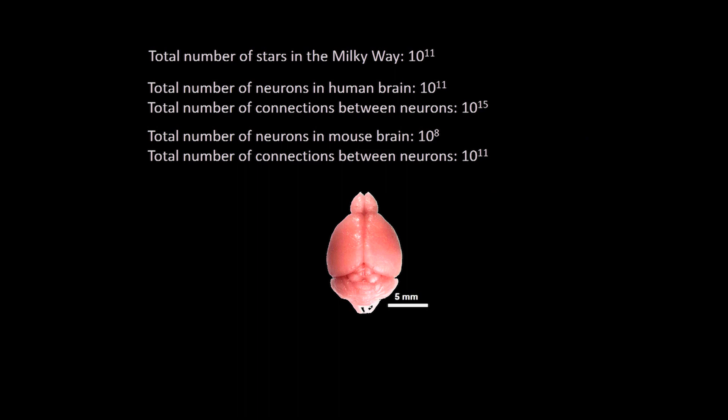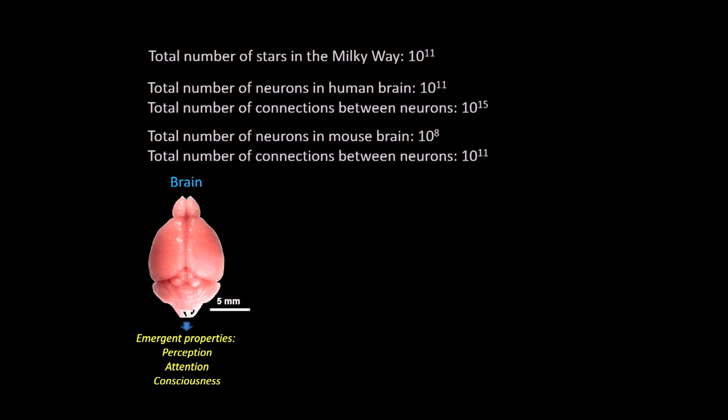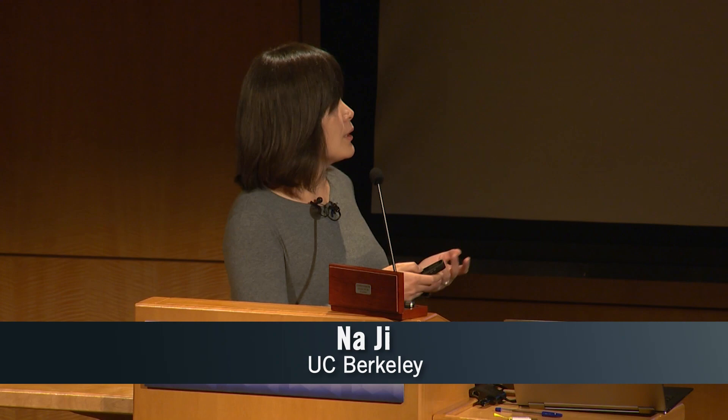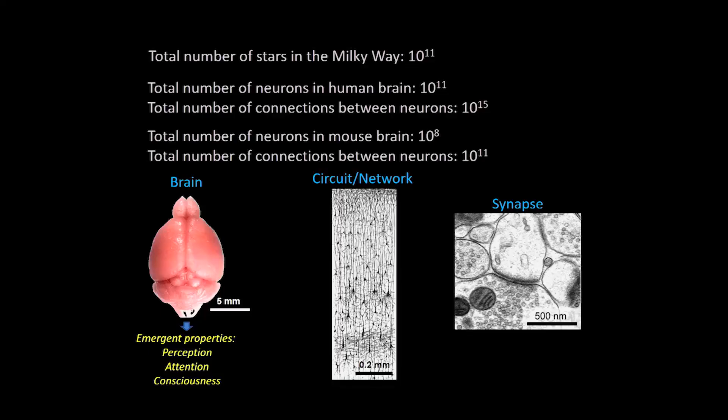Even when you look at a much smaller brain — for example, that of a mouse — there are still about 100 million neurons forming about 100 billion connections. What makes it difficult to understand is not just the sheer numbers. All the mental activity we want to understand — perception, attention, or consciousness — is really an emergent property of not just a few neurons, but millions up to billions of neurons forming a neural network.